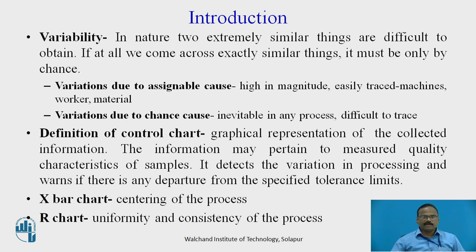Introduction — Variability: In nature, two extremely similar things are difficult to obtain. If at all we come across exactly similar things, it must be only by chance. It is said that even twins cannot be alike. So, if we take any operation, there is a variation which is bound to happen.